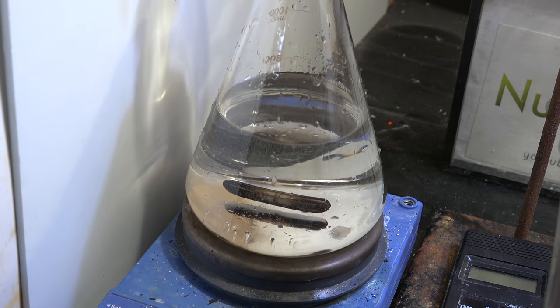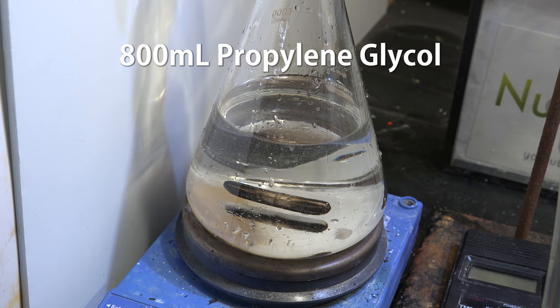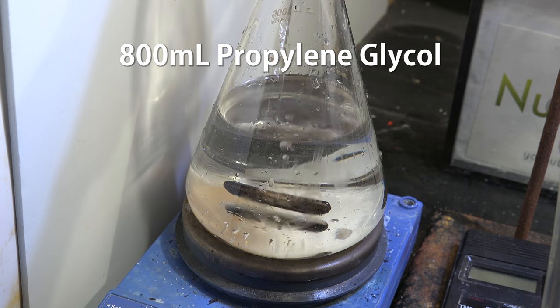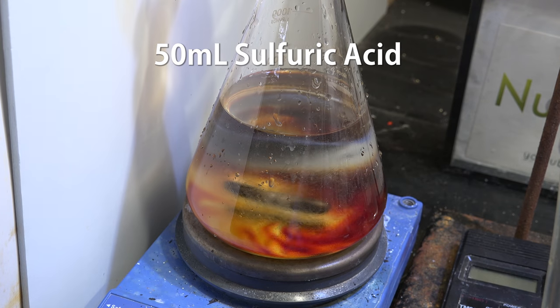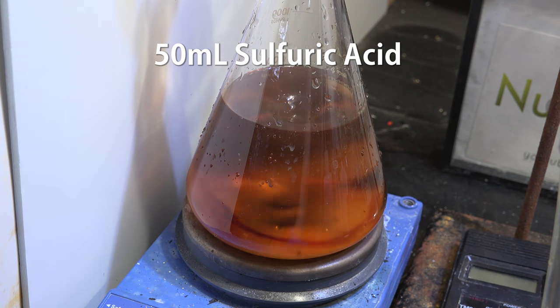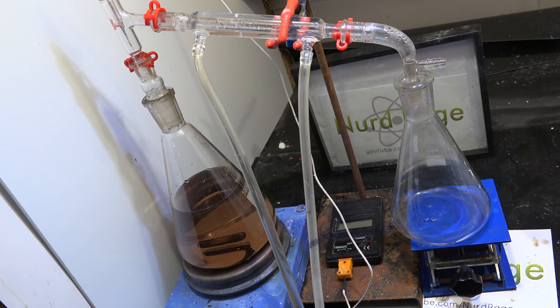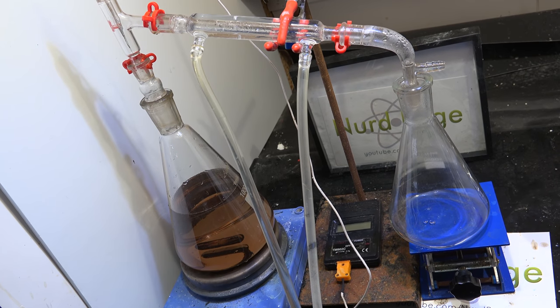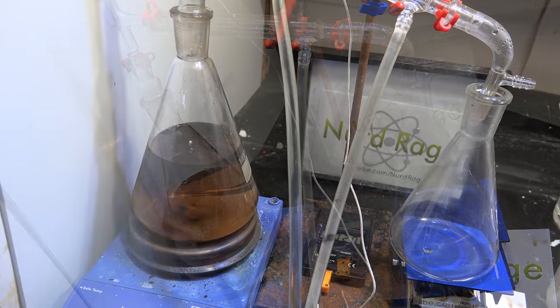Anyway, to make our dimethyl dioxane we get 800 mL of our propylene glycol and add to it 50 mL of concentrated sulfuric acid. I'm using low grade drain cleaner acid. Then we simply set up for distillation and slowly turn up the heating until the reaction starts and we start distilling.